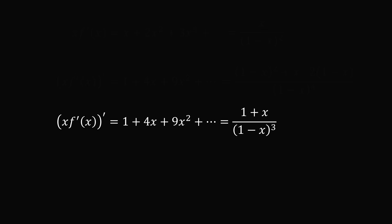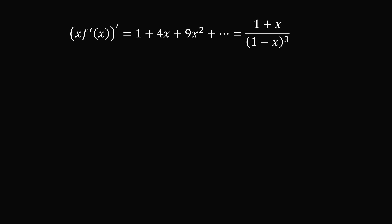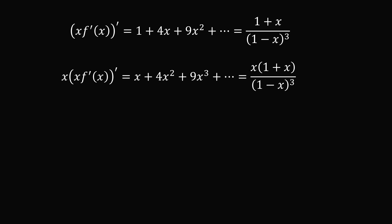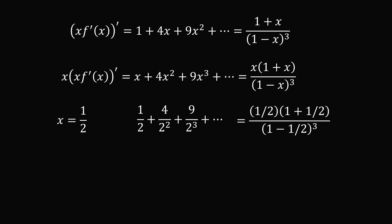We're almost there. We take this entire series and multiply it by x, giving x plus 4x squared plus 9x cubed and so on, equal to x times (1 + x) all over (1 − x) cubed. We substitute x equals 1/2, and that exactly gives us the series S that we want. Substituting on the right-hand side and simplifying, we get S is equal to 6. And that's a final way to solve this question.